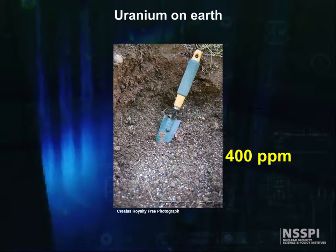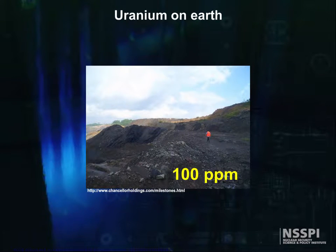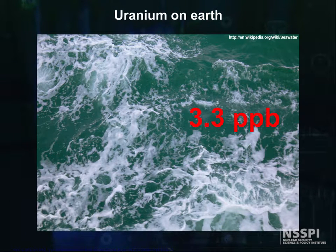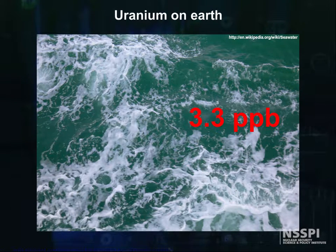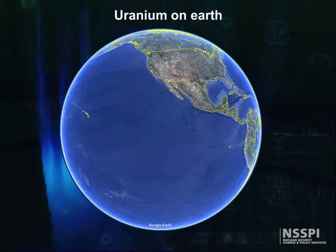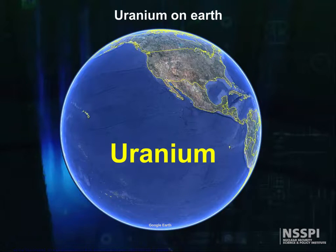Fertilizers contain uranium concentrations as high as 400 parts per million, which makes them almost an ore body, and some coal deposits contain uranium concentrations greater than 100 parts per million. Seawater contains approximately 3.3 milligrams of uranium per cubic meter — that's 3.3 parts per billion. This resource is gigantic. If recoverable, this amount is limitless compared to world demand. If even a portion of uranium in seawater could be used, the entire world's nuclear fuel for power generation could be provided for thousands of years.